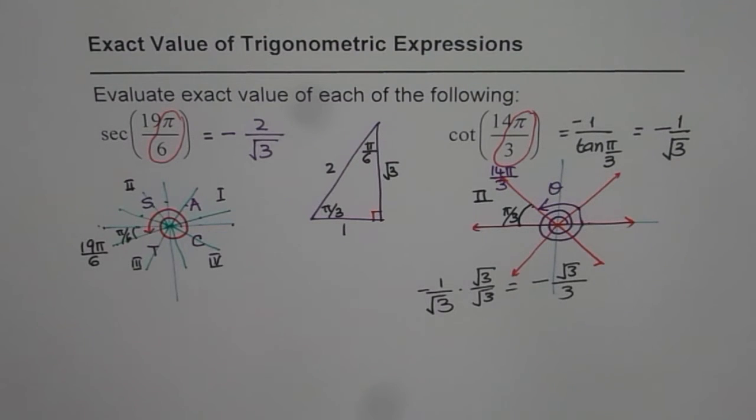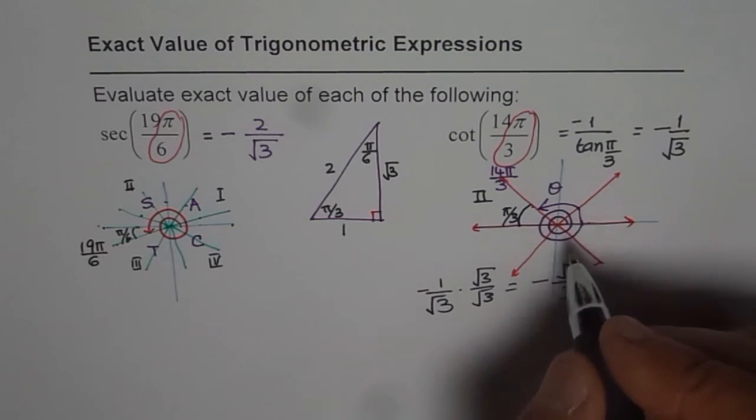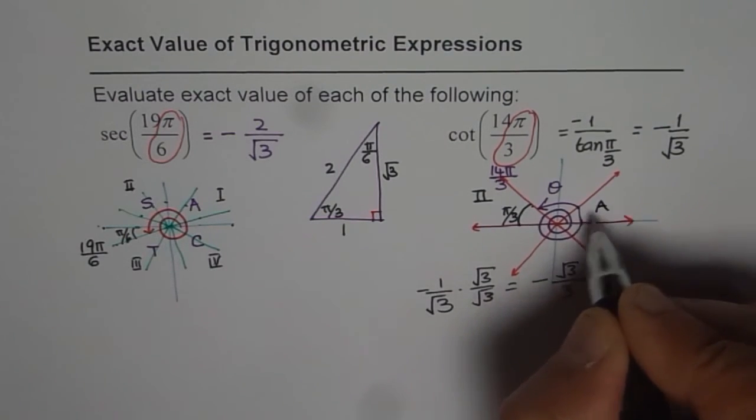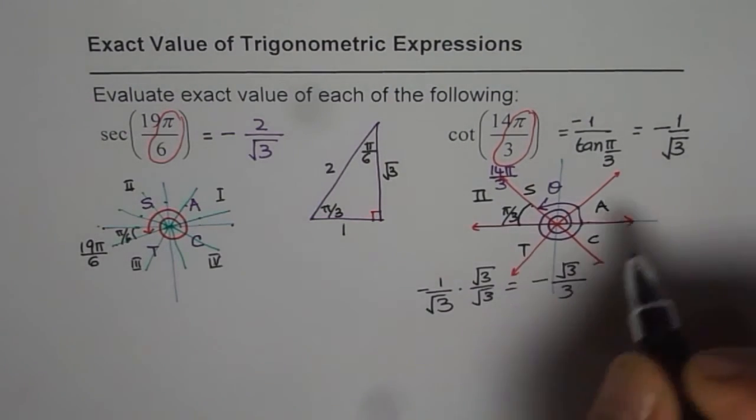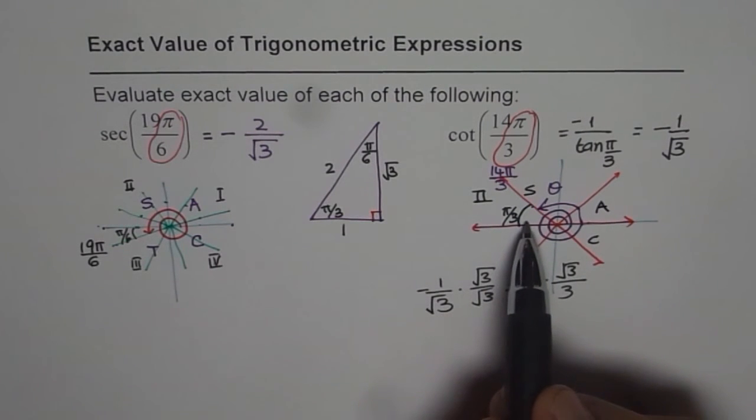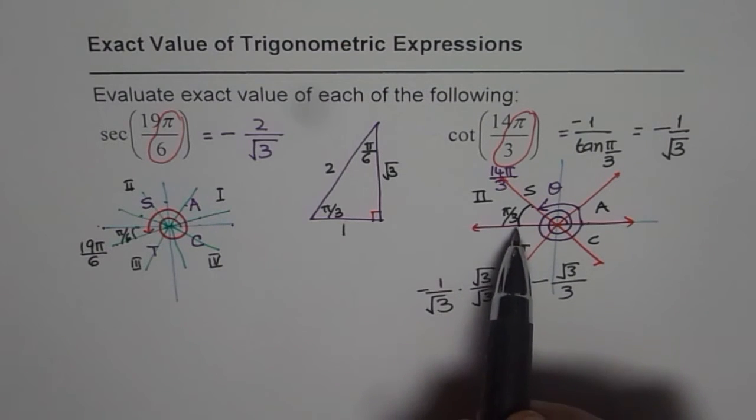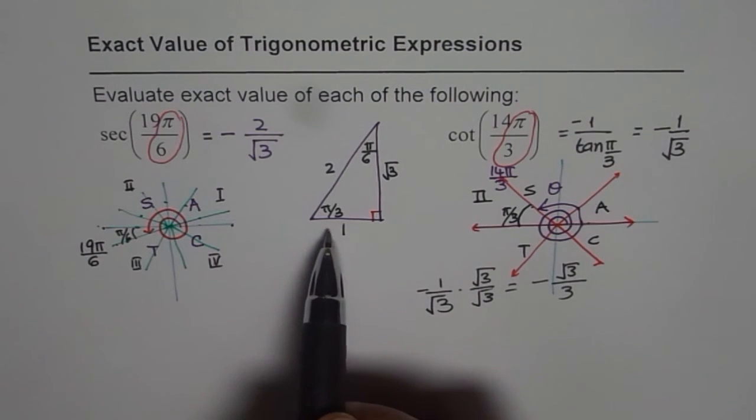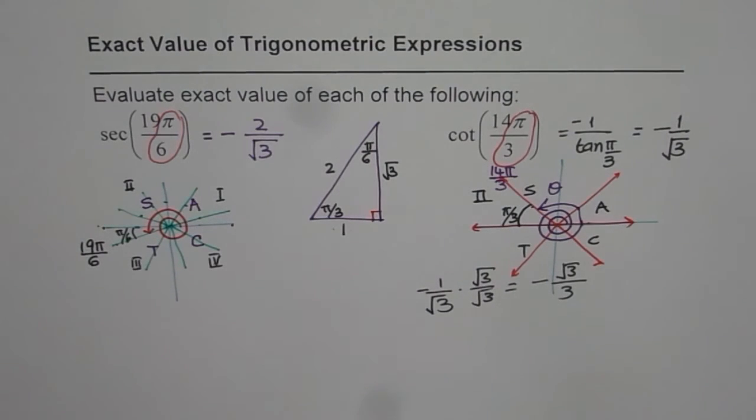So you should first figure out in which quadrant you are. Then apply the CAST rule. So that you know whether it is negative or positive. Find the reference angle or the acute angle. Based on that angle, look into your special triangle. And then write down the exact value. That is the process we need to follow. Thank you and all the best.